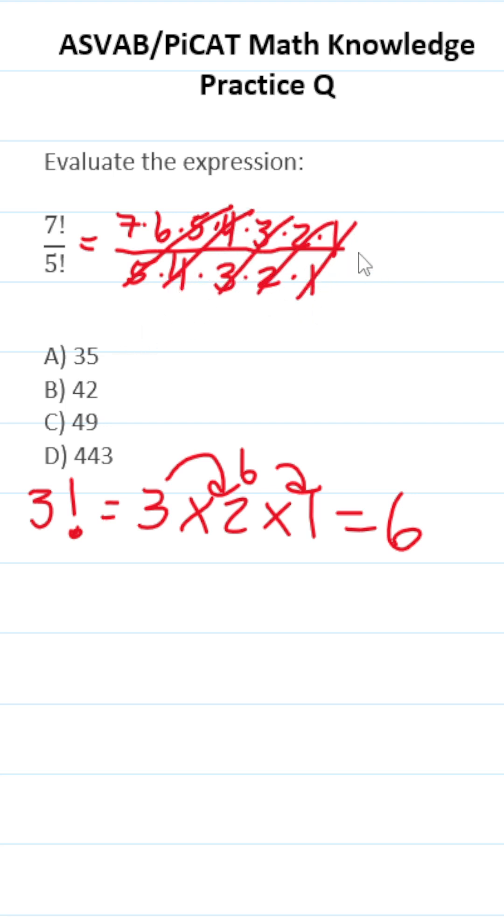And that just leaves us with 7 times 6, which you should know is 42. So this one is B, 42.